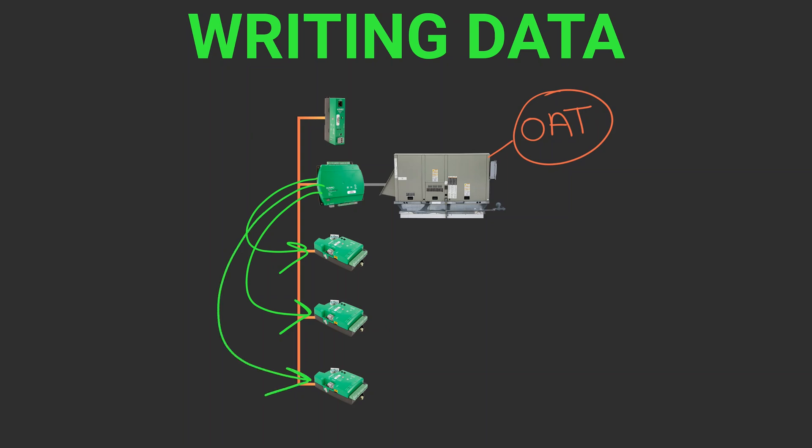this controller is pushing occupancy information to other devices across the network. The receiving controller updates its object information, and the operation in the receiving controller is influenced by the new data.